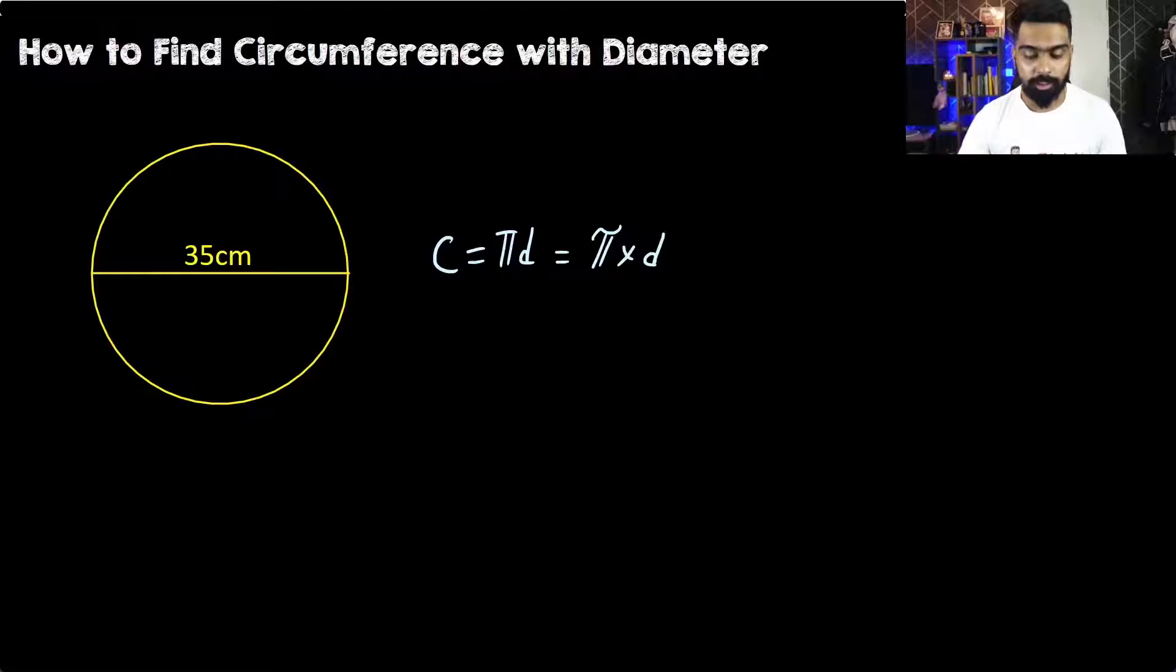In this question, I'm going to use 22/7 because I know that 7 and 35 can simplify. So we have 22/7 multiplied with the diameter which is 35 centimeters.